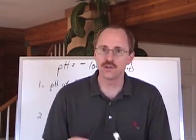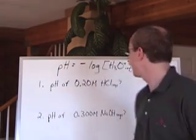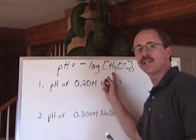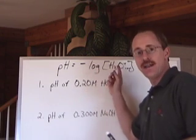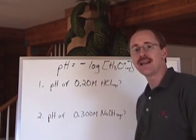The pH of a solution is arrived at by getting the hydronium ion concentration, taking the log of that, and then making it a negative.